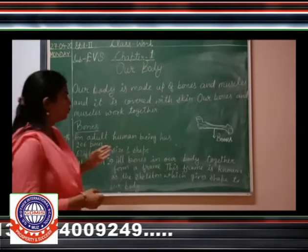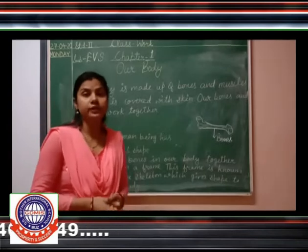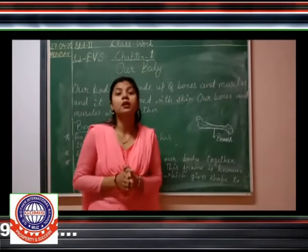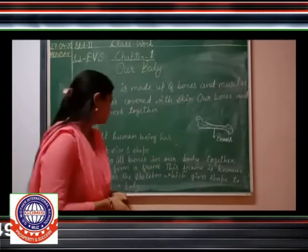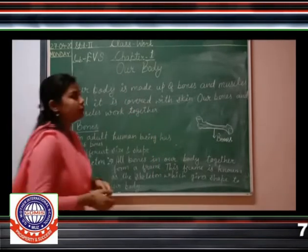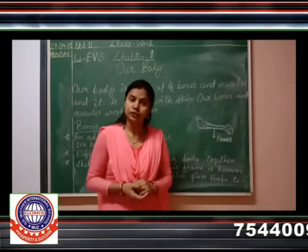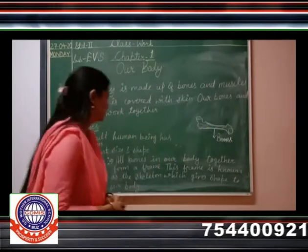An adult human being has 206 bones. Bones are different sizes and shapes.